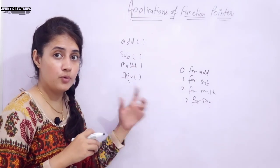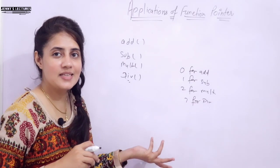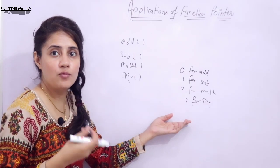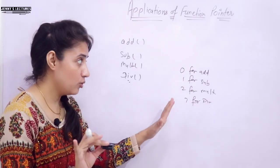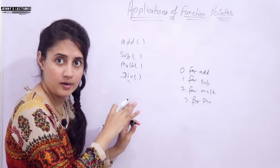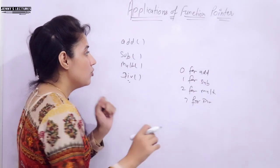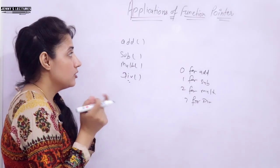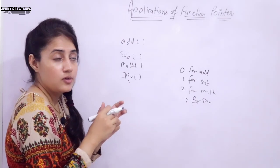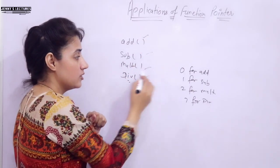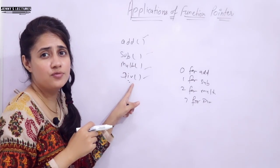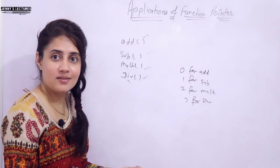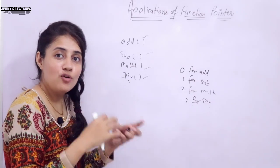How would you write this program? Your first answer would be a switch-case statement, because that is exactly what we do when the user enters a choice and you have to execute code accordingly. I am not going to write that program here with switch-case, but I will show it when we run the code. Rather than switch-case, we will write this using function pointers — specifically, an array of function pointers, since a function pointer can hold the address of any function.